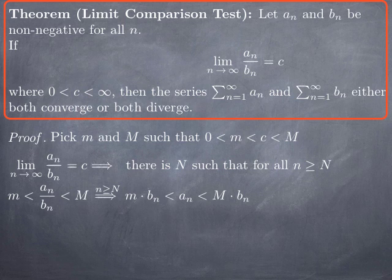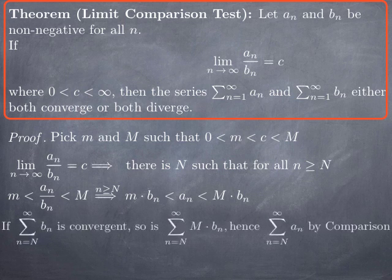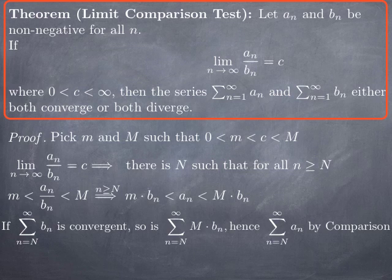That's enough for us to argue by comparison. If the series of b_n is convergent, then in particular the series starting at capital N is also convergent — we just removed finitely many terms. When we multiply by a constant, we get again a convergent series. But that convergent series has general term larger than the general term for the series of a_n, at least starting at capital N. So we conclude that the series from n equal N to infinity of a_n is convergent by comparison. Adding back finitely many terms, the series of a_n starting at 1 is also convergent.